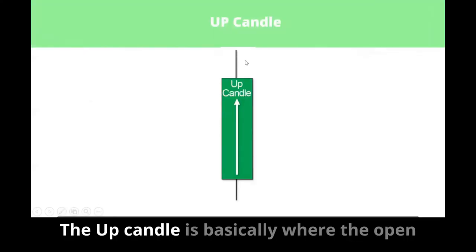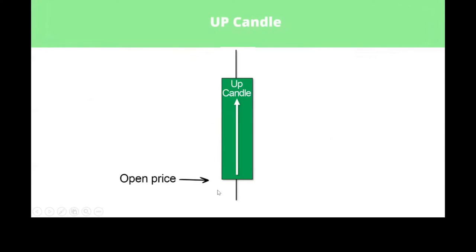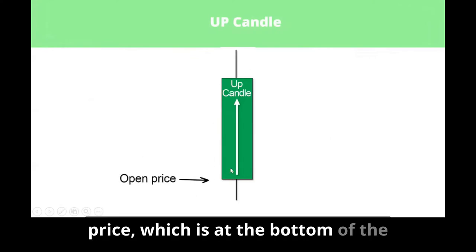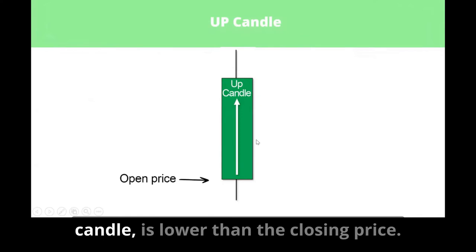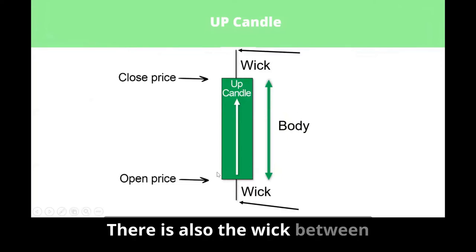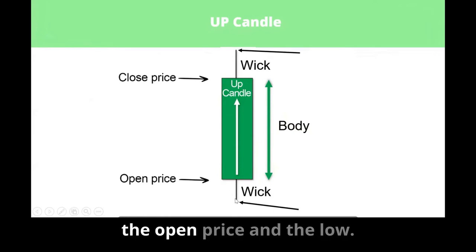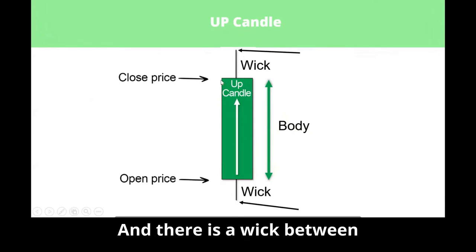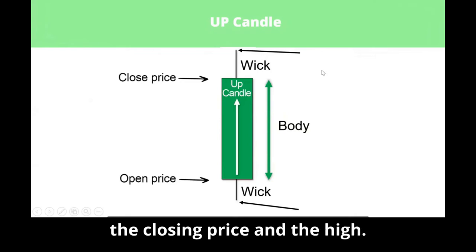The up candle is basically where the open price, which is at the bottom of the candle, is lower than the closing price. Between the open and closing price is the body. There is also a wick between the open price and the low, and a wick between the closing price and the high.